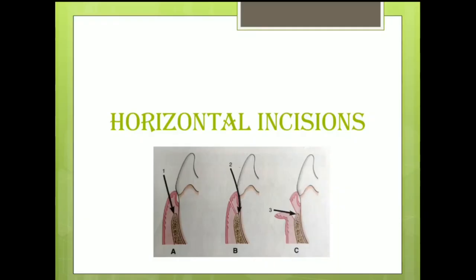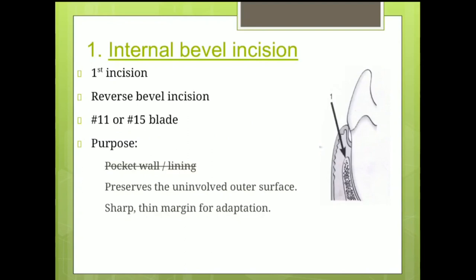Beginning with the horizontal incisions, the first one is the internal bevel incision. It is usually the first incision given in most flap surgeries. From a historical point of view, the gingivectomy procedure which uses external bevel incision was introduced much earlier than flap surgeries. Hence, internal bevel incision is also known as reverse bevel incision because the direction of the incision is reversed to that of the original external bevel incision of gingivectomy, as shown by the red arrow in the picture. This incision is usually given using a number 11 or number 15 BP blade. The purpose is to eliminate the pocket wall or lining, preserve the uninvolved outer surface of the gingiva, and to provide a sharp thin gingival margin to be adapted at the tooth-bone junction.